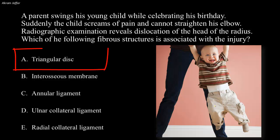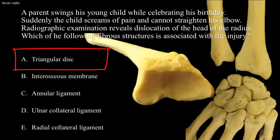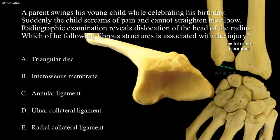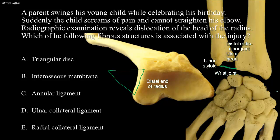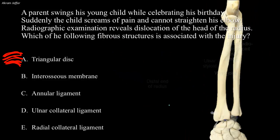Let's deal with the first option. The triangular disc is a fibrocartilaginous disc which separates the distal radioulnar joint from the wrist joint. It is called triangular because it has a triangular base attached to the radius, and the apex extends medially to the styloid process of the ulna. The disc thus articulates with the head of the ulna, separating the distal radioulnar joint from the wrist joint, and the head of the radius is located proximally and is not related to this option.